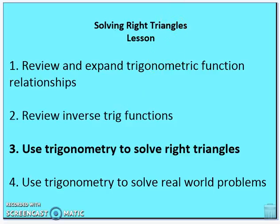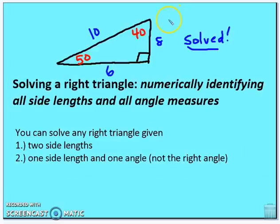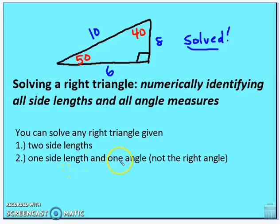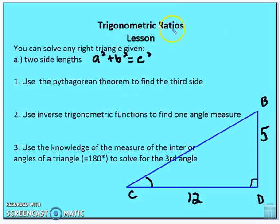Now let's talk about using trig to solve right triangles. Solving a right triangle means numerically identifying all side lengths and all angle measures — for example, angles of 90°, 40°, and 50°, and sides of 6, 8, and 10. We can solve any right triangle given any two side lengths, or one side length and one non-right angle measure.